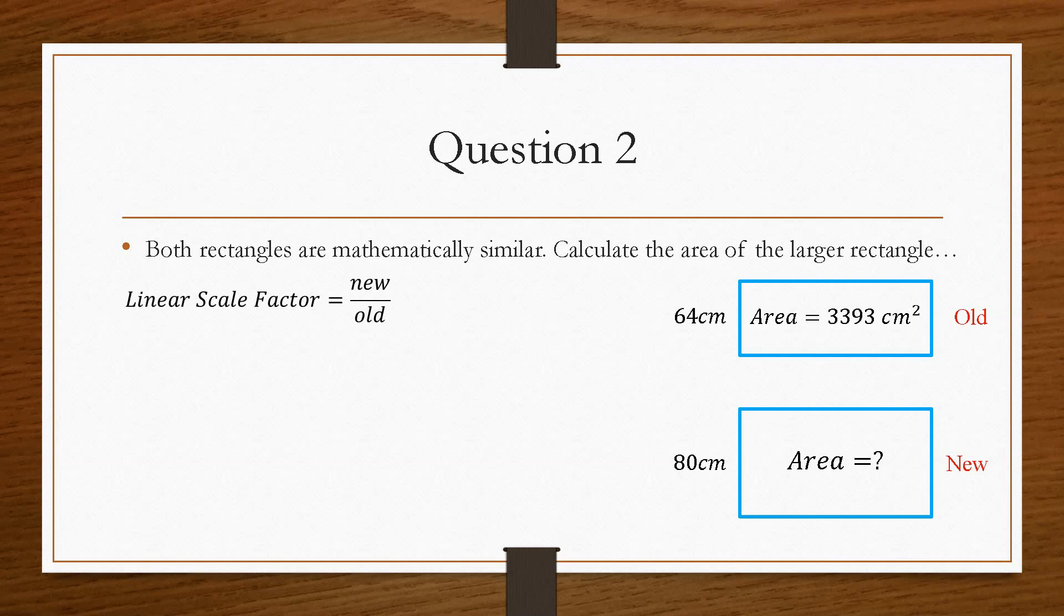Now, we have the value of 64 centimetres is this length of the smaller rectangle, and 80 centimetres is for the larger rectangle. So we have the ratio that the bigger one is compared to the smaller one. So we'll substitute in these values, and we find that the larger rectangle is 1.25 times bigger than the smaller one.